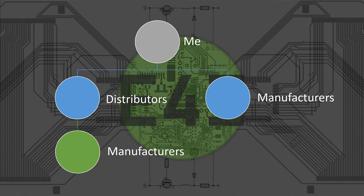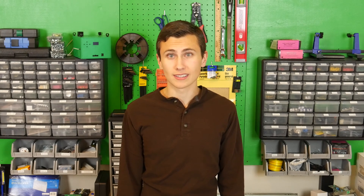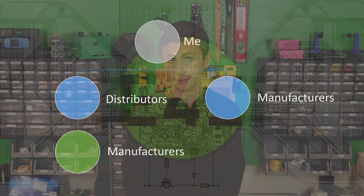Buying directly from a manufacturer is great, because you can save a lot of money by not paying someone to buy components and then sell them to you. But let's be honest, Vishay isn't really interested in selling John Doe 15 resistors. But a lot of distributors are. Let's take a moment to mention a few manufacturers and distributors to make sure we're on the same page.